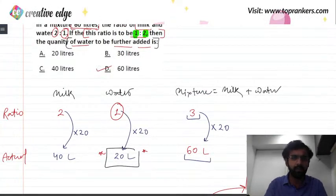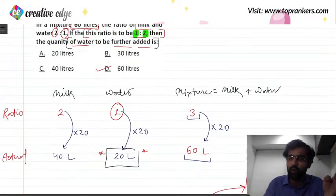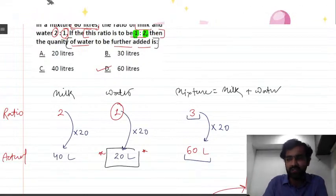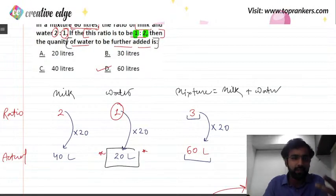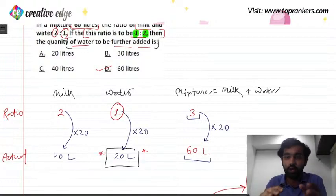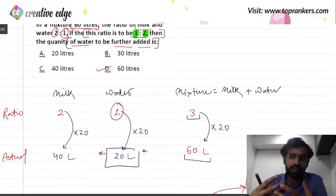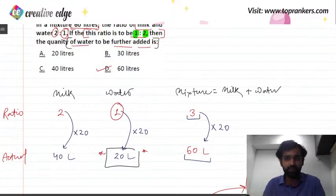This topic is relevant for all design entrance exams — NATA, NID, NIFT, and similar exams — all of which include aptitude sections. These are some techniques developed at Creative Edge through which you can very easily crack ratio and proportion questions. I hope that answers your question, Sunil. Let's try another question to give you more clarity on ratios.